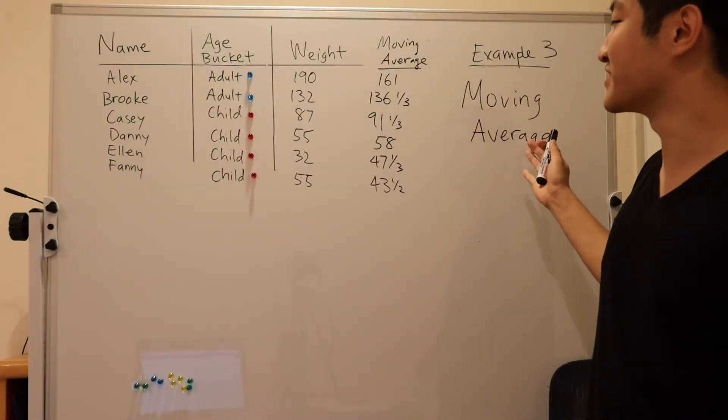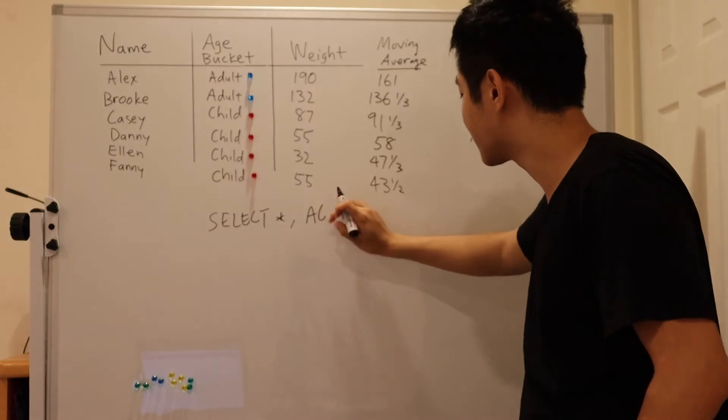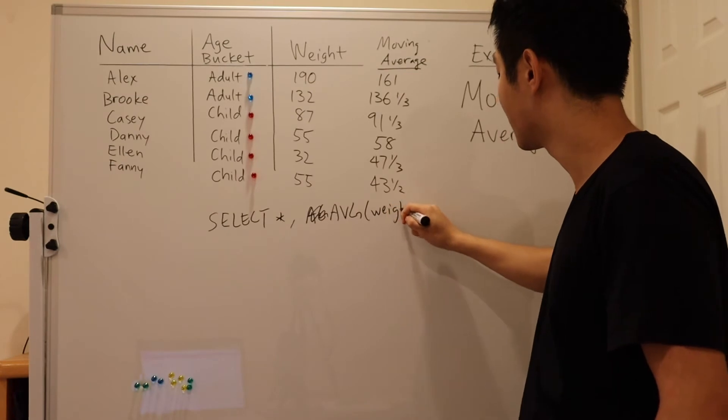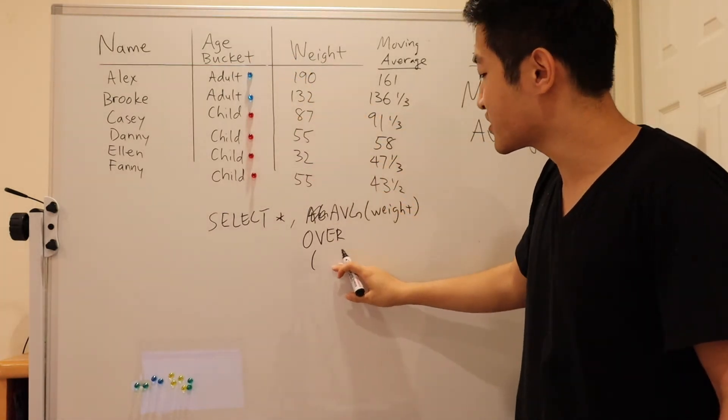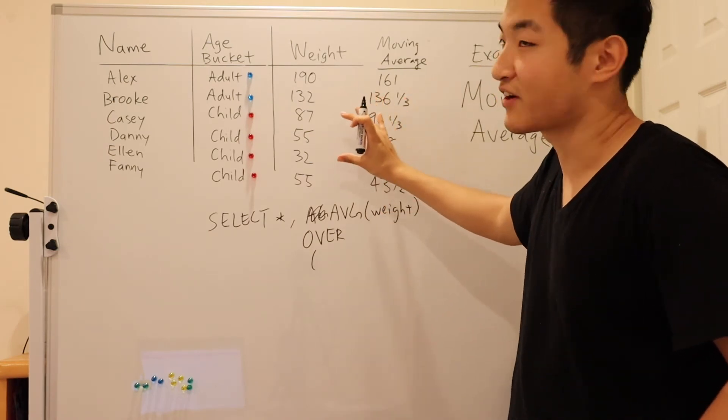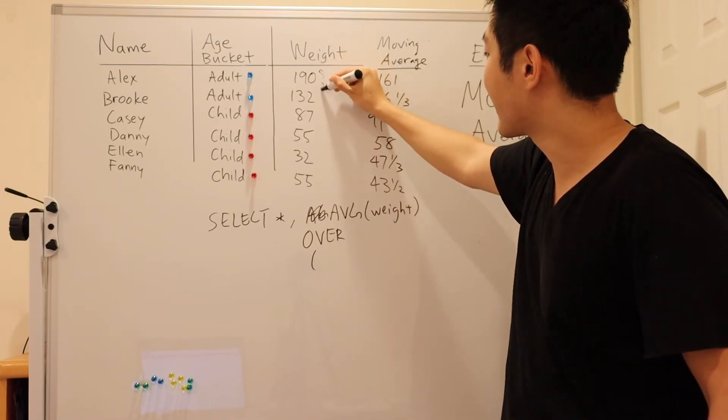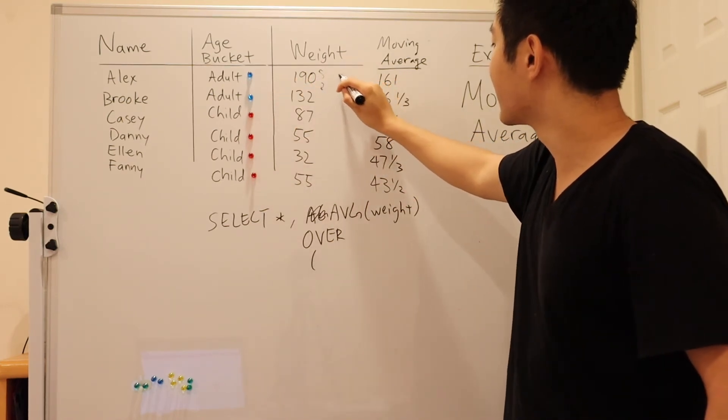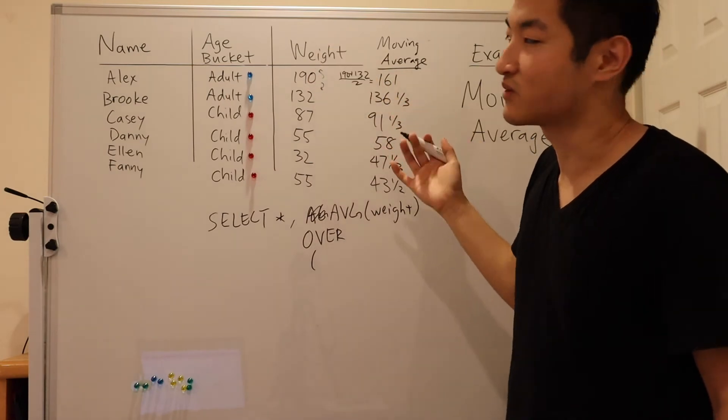And now our third example is moving average. So we're averaging weights as before. So avg of weight over, in this case, we don't care about age bucket anymore. So the partition by is optional. You don't need to include it. But what we do need to specify for our window is we just want the rows right before and right after, right? So then for this first row, Alex, the moving average is 190 plus 132 over 2, which is 161. There are only two rows here.